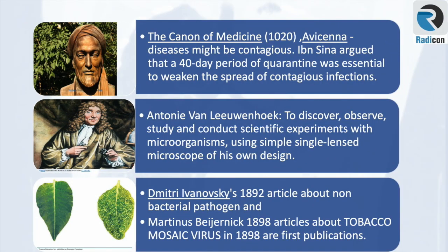Scientific knowledge of microbial infections began in year 1020, when Avicenna suggested that TB and some other diseases might be contagious, and a 40-day period of quarantine was essential to weaken the spread of contagious infections. The real breakthrough came in 1673, when Antony van Leeuwenhoek designed his own lenses and saw microorganisms. His most remarkable microscopic discovery was bacteria. No one else would see bacteria again for over a century. His observations also included protozoans, which he called animalcules, and he is considered the father of microbiology.